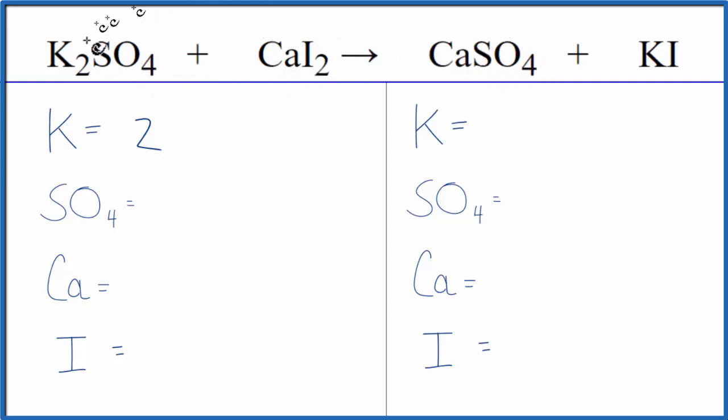So when we have these double displacement reactions, we have these polyatomic ions. It's really helpful to count them as just one item if they appear on both sides. So let's see how that works. So we have one sulfate here, we have our one calcium and two iodine atoms.